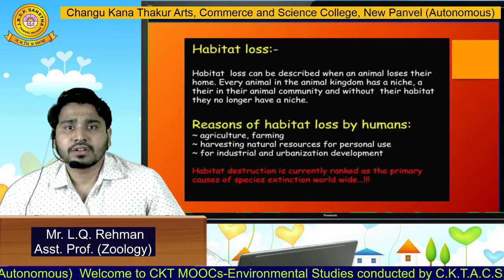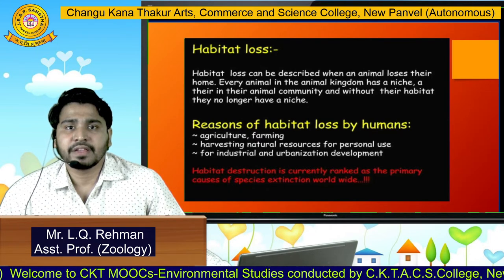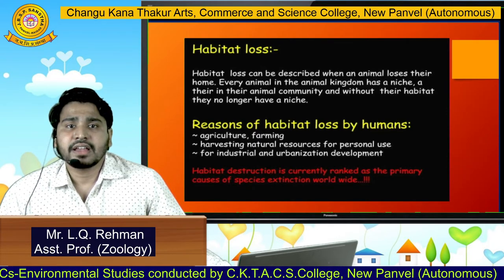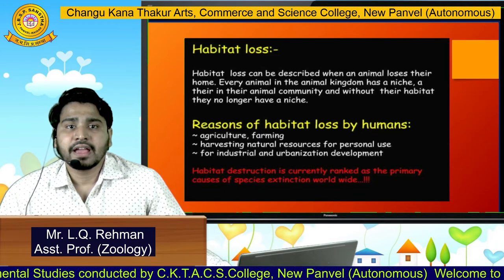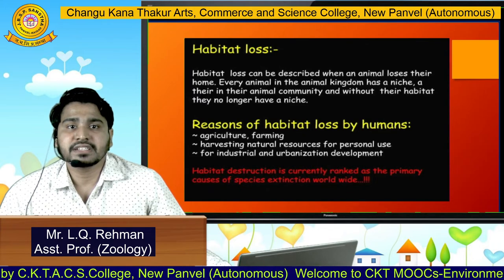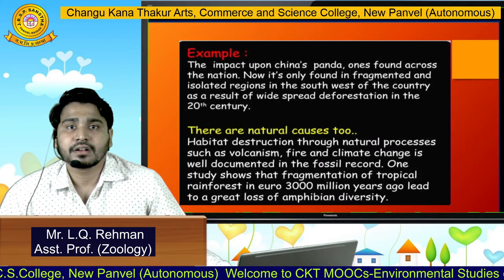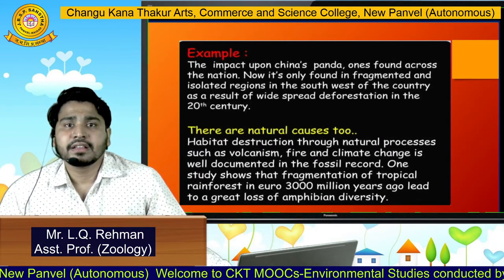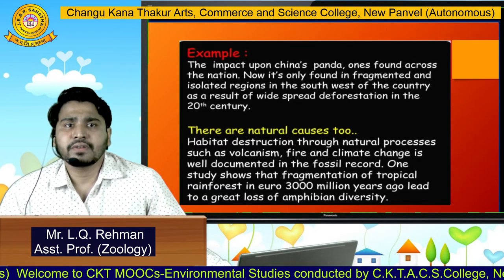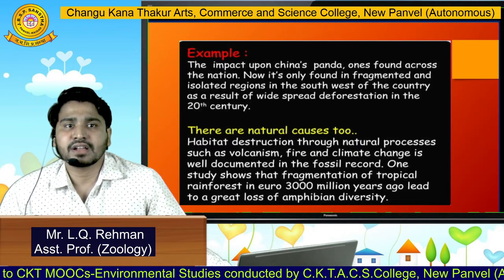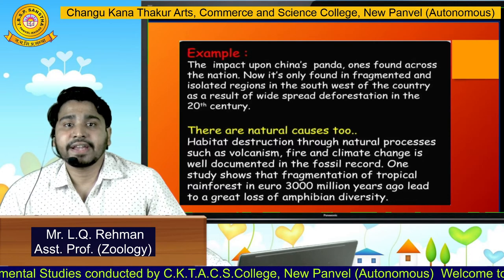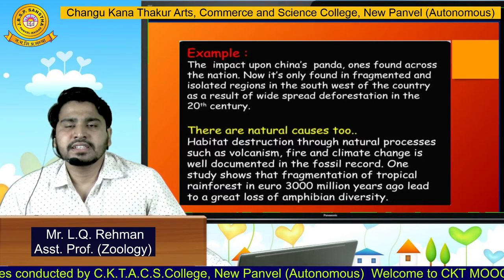Reasons for habitat loss by humans include extensive agriculture or farming and harvesting natural resources for personal use and for industrial and urbanization development. Habitat destruction is currently ranked as the primary cause of species extinction worldwide. For example, China's panda, once found across the nation, is now only found in fragmented and isolated regions in the southwest of the country as a result of widespread deforestation in the 20th century.